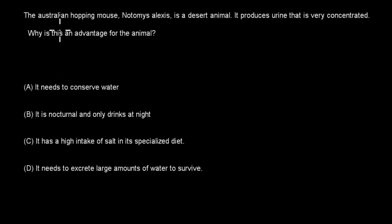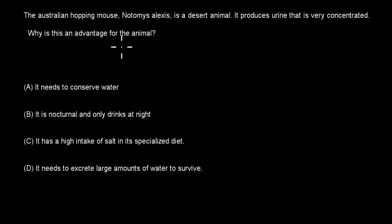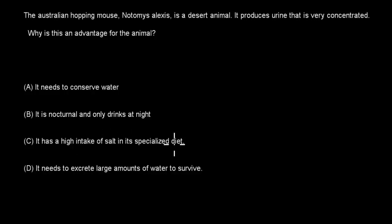Here's the first question. The Australian Hopping Mouse is a desert animal. It produces urine that is very concentrated. Why is this an advantage for the animal? A: It needs to conserve water. B: It is nocturnal and only drinks at night. C: It has a high intake of salt in its specialized diet. D: It needs to excrete large amounts of water to survive.